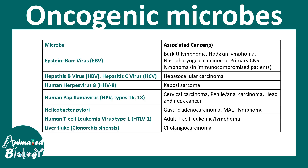To review: Epstein-Barr virus (EBV) is associated with Burkitt's lymphoma, Hodgkin's lymphoma, nasopharyngeal carcinoma, and primary CNS lymphoma. Hepatitis B and C viruses are associated with hepatocellular carcinoma. Human herpesvirus 8 (HHV-8) is associated with Kaposi's sarcoma. HPV types 16 and 18 are associated with cervical carcinoma, penile carcinoma, and head and neck cancers. Helicobacter pylori is associated with gastric adenocarcinoma and rarely MALT lymphoma. HTLV-1 is associated with adult T-cell leukemia or lymphoma. Liver fluke is associated with cholangiocarcinoma.